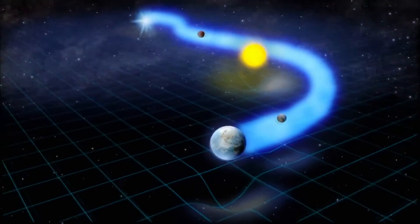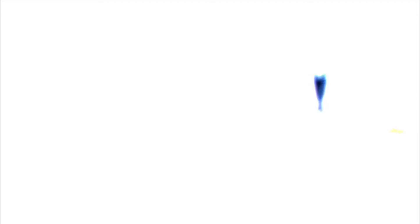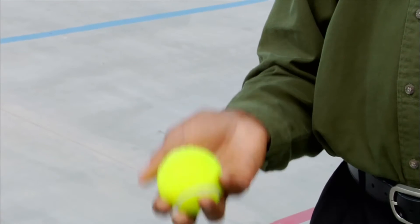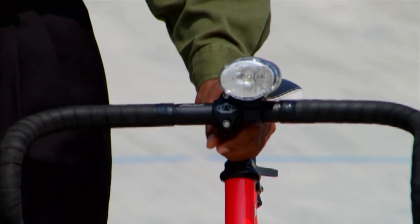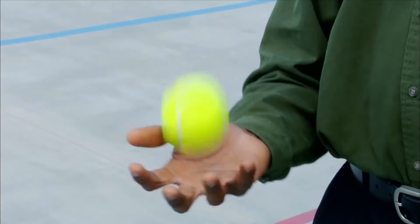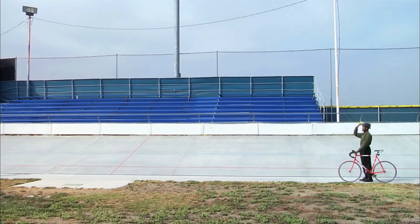We can begin to understand why the universe bends itself around light speed by joining physicist Clifford Johnson at a bicycle track, where a tennis ball will compete against a beam of light. If I throw an ordinary object like a tennis ball, I can throw it at a given speed, and it'll go a certain distance. This is the path of the tennis ball as Johnson throws it while he's standing still.